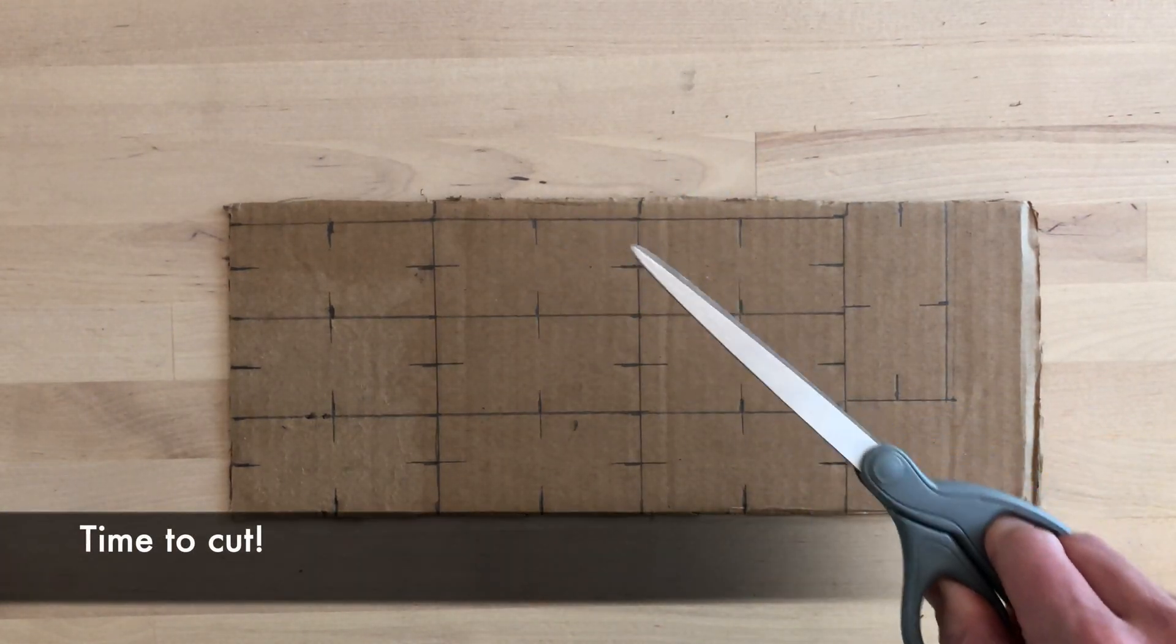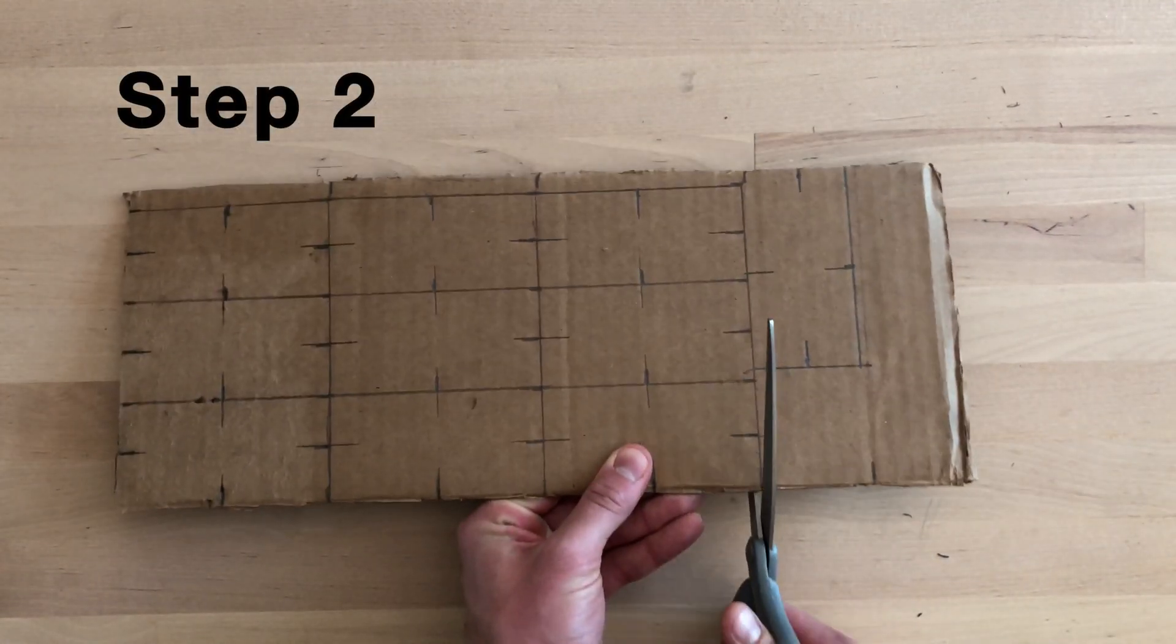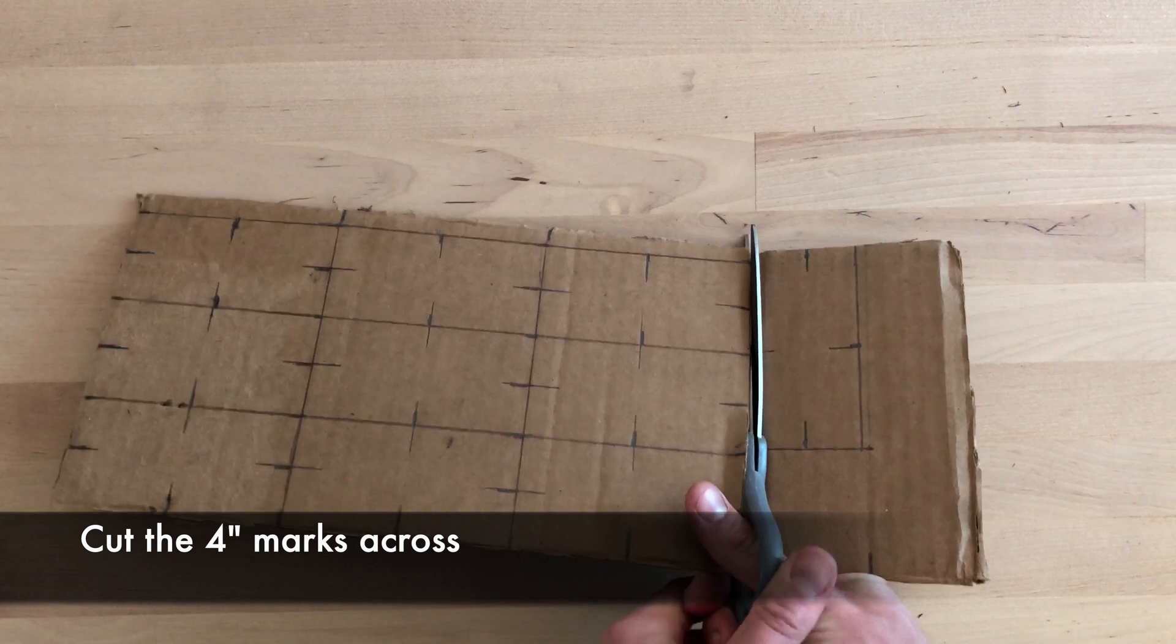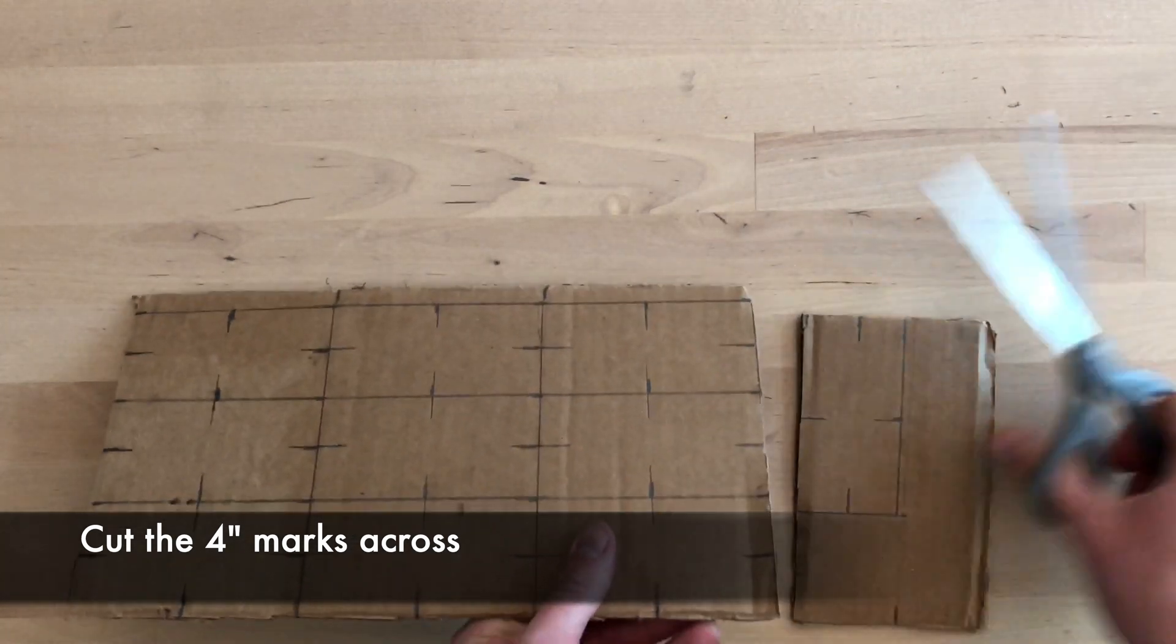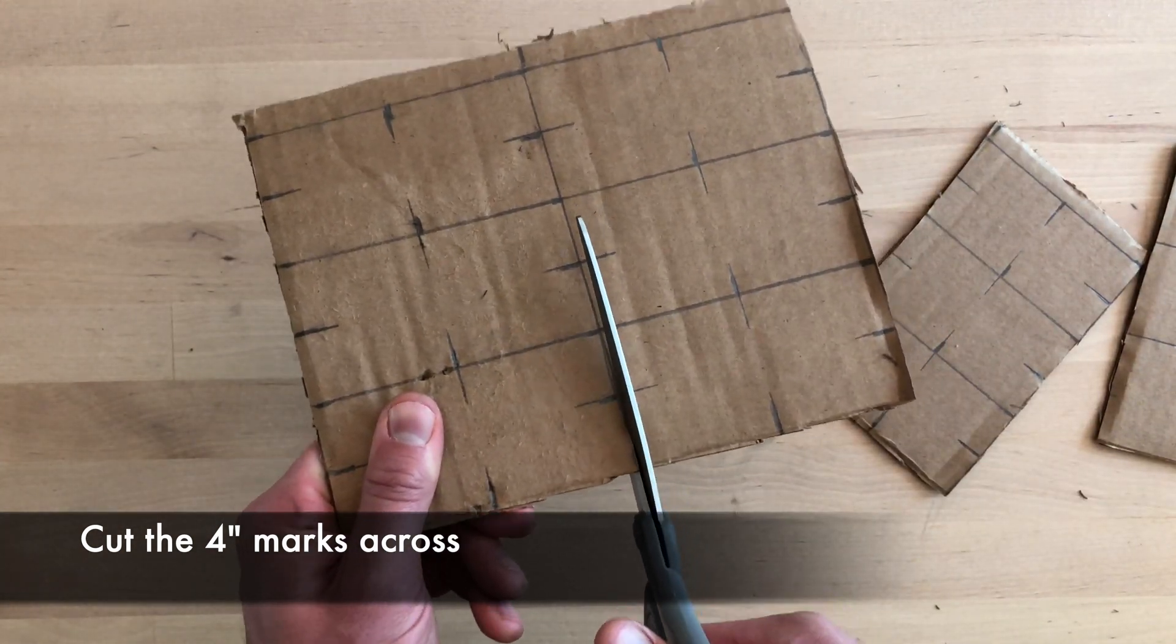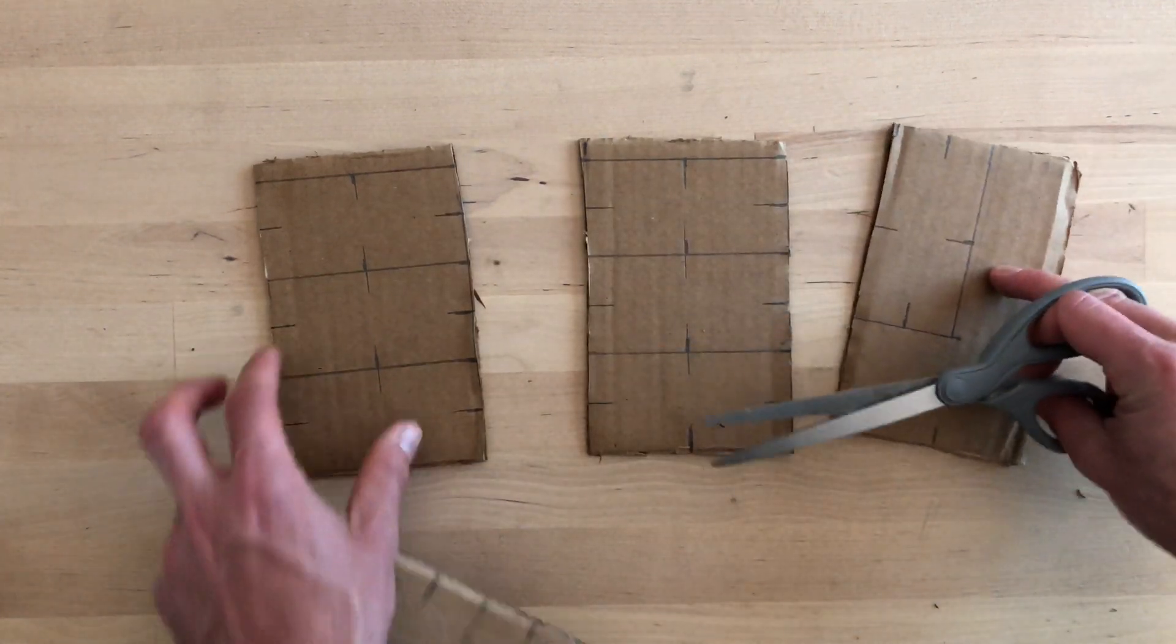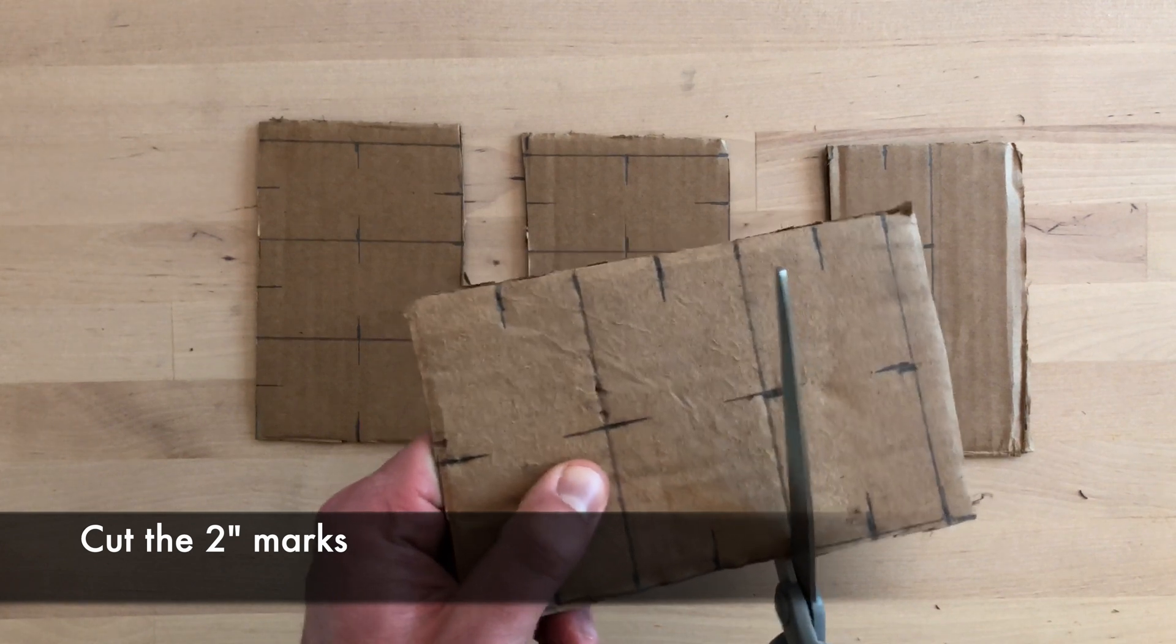Now it's time to cut. Step 2. First cut the 4 inch marks all the way across. Now it's time to cut the 2 inch marks.